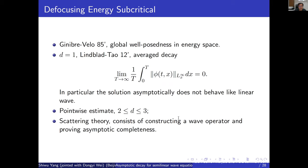People were expecting this to hold for strong solutions at least in the energy space. This was addressed by Shatah–Struwe in 1994, who proved the solution of the energy-critical case is globally well-posed in energy space for all dimensions. Bahouri and Gérard also proved the solution scatters in the energy space by observing that the potential energy decays to zero. This completes the story for the defocusing energy-critical case.